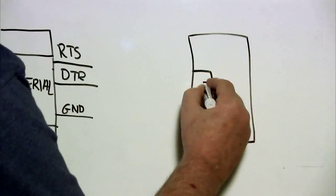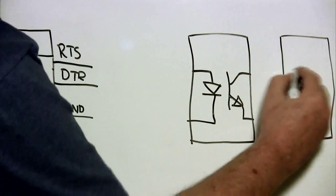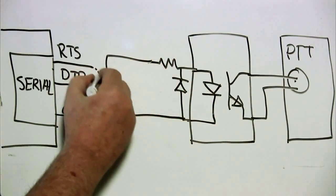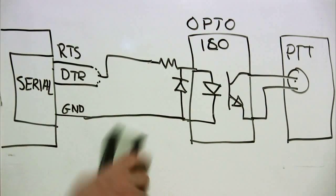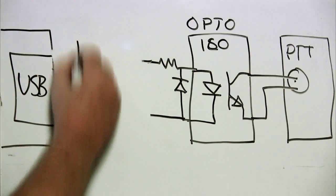So a method to generate push to talk for the radio is by using a serial port on the computer with either the RTS or the DTR command pins through an opto-isolator switch connected to the push to talk input on the rear of the radio. The opto-isolator also provides ground isolation.